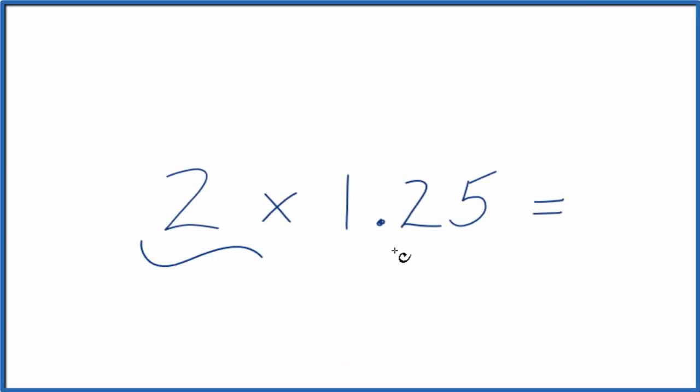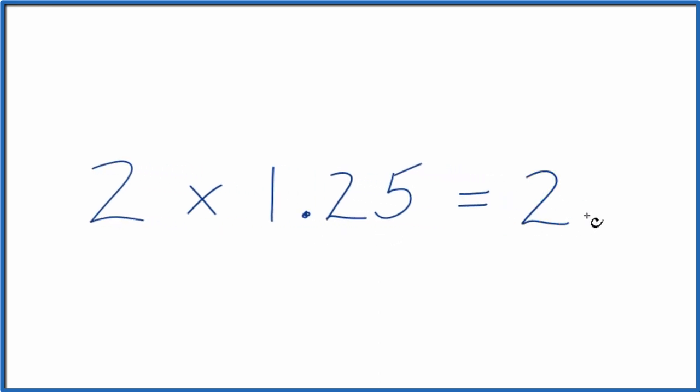Let's multiply 2 times 1.25, and there's a few ways we can think about this. First, you could just take a calculator. 2 times 1.25, that gives you 2.5. So that's one way to do it.